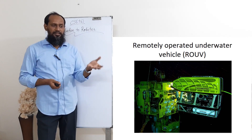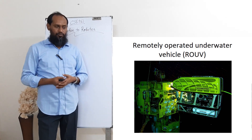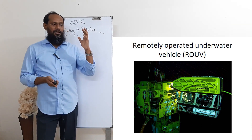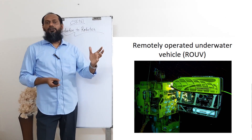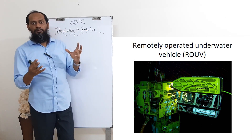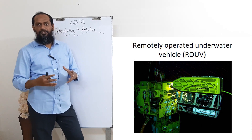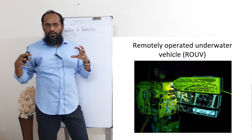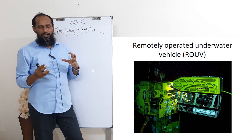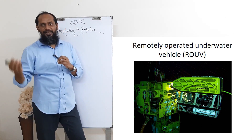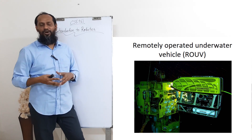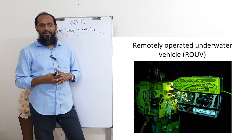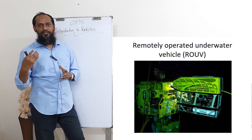And then remotely operated underwater vehicle, which is called ROUV. Remote operation underwater and in the air is not the same — the same signal cannot go under the water. So for controlling the underwater vehicle, they need to use a different kind of signal.